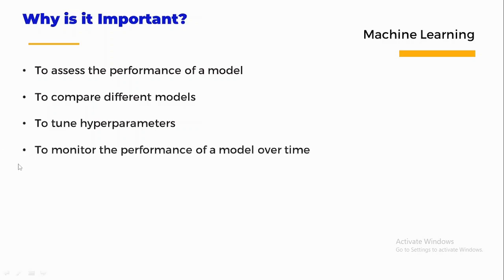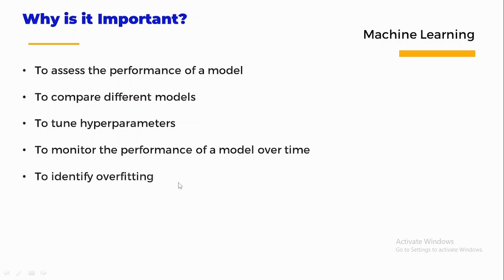The next reason is to monitor the performance of the model over time. Evaluation metrics can be used to monitor the performance of a machine learning model over time. Another reason is to identify overfitting — overfitting occurs when a model learns the training data too well and cannot generalize to new data.